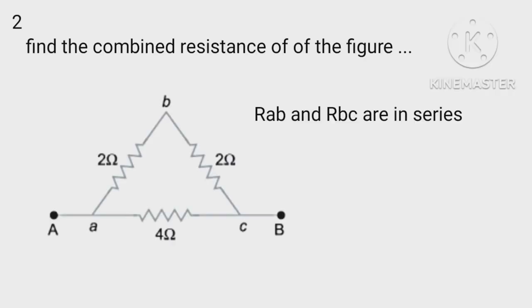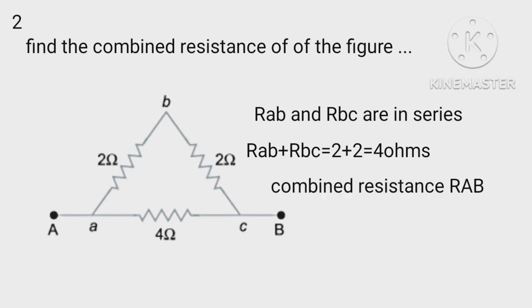RAB and RBC are in series. Therefore, RAB plus RBC equals 2 plus 2 equals 4 ohm. Now combined resistance RAB equals 4 times 4 by 4 plus 4 equals 16 by 8 equals 2 ohms.